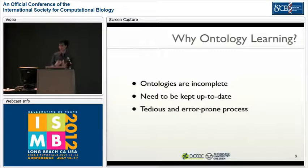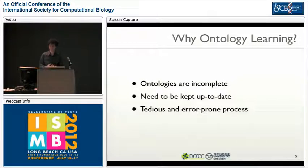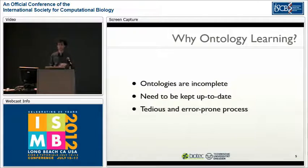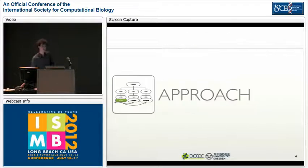Ontologies are by nature incomplete — there's no complete representation of nature in ontologies. We also need to keep ontologies up to date, because if they're not complete and we use them for gene annotation or document annotation, integrity and completeness will suffer. What is usually done is manual ontology extension by manually adding new terms and relations, but this is a tedious and error-prone process. So we're trying to automate this process.